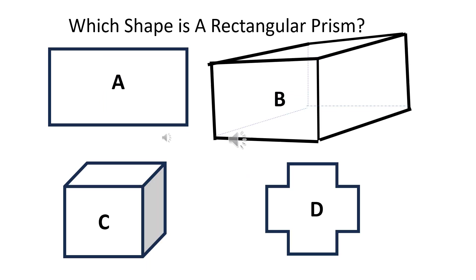Which shape is a rectangular prism? The right answer is B.